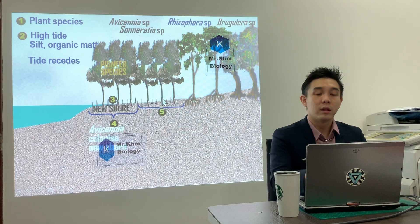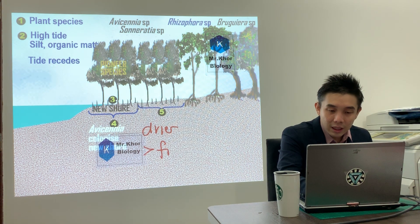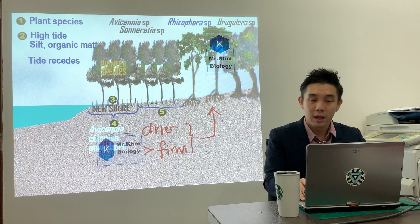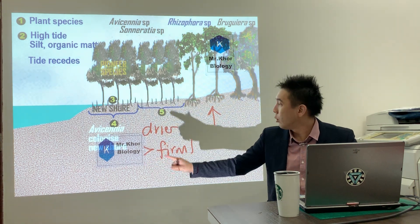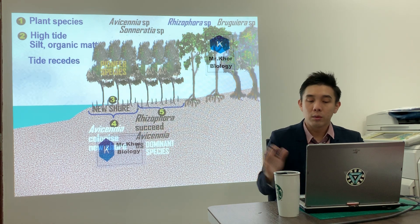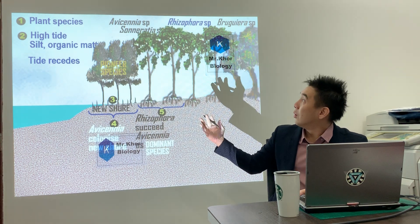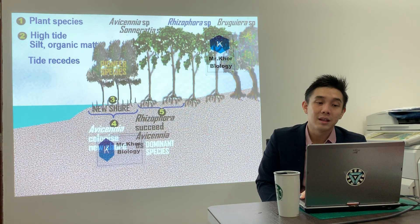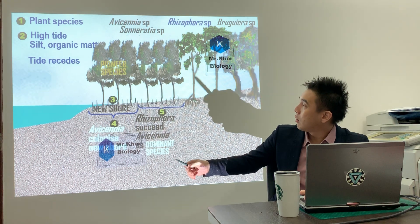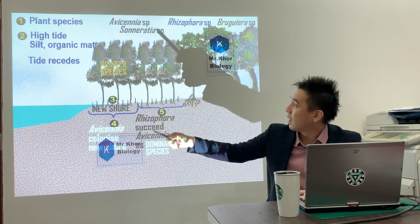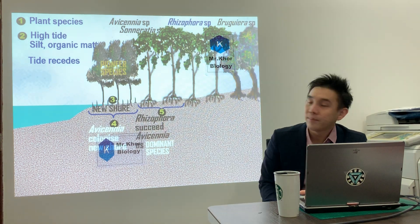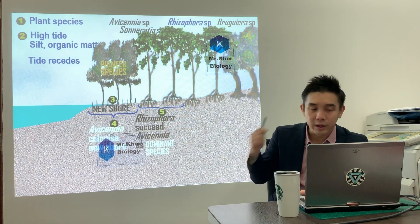From here on it becomes simpler. The region now becomes drier and more firm — lebih kering, lebih padat — and therefore more suitable for Rhizophora. Rhizophora will succeed, meaning take over, Avicennia sonarathia as the dominant species. This process is called succession.